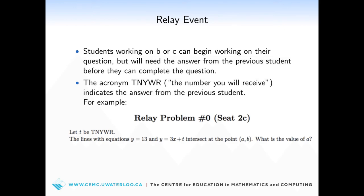For example, here is a past relay problem 0 for seat 2C. It begins with: let T be the number you will receive. The student is asked to find the intersection point of two lines. The student can begin working on the intersection of the lines, but will need the value of T in order to complete the question.